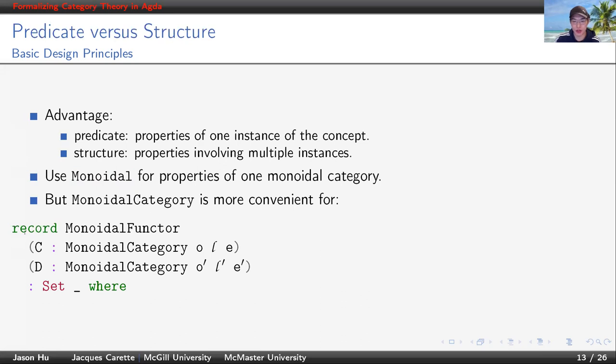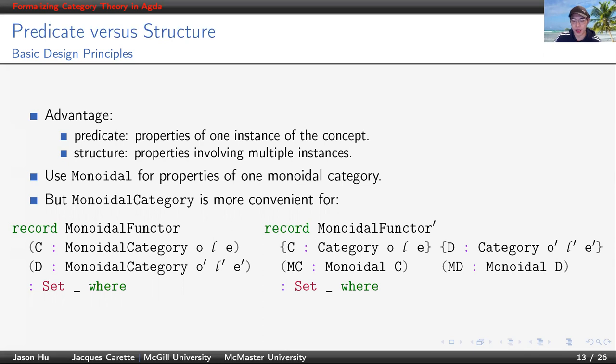Consider this definition of monoidal functor. The signature is the minimal we can get. We can still use the predicate style if we want to. But as you can see, the size of signature doubles. And this is really a simple case. The factor goes up quite quickly in more complex cases. So we didn't go down this route.